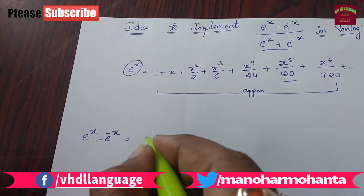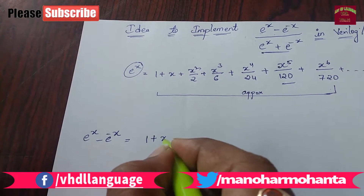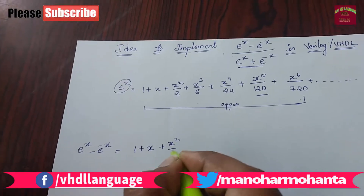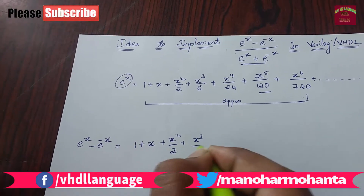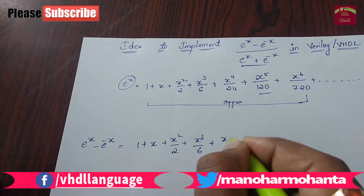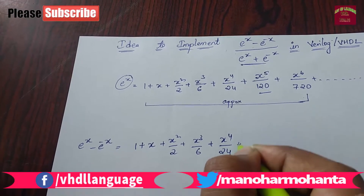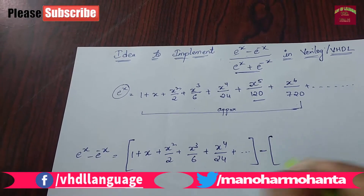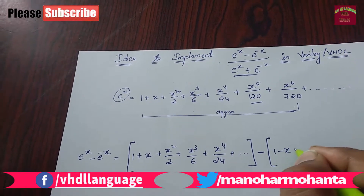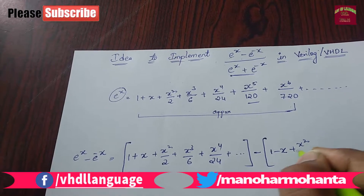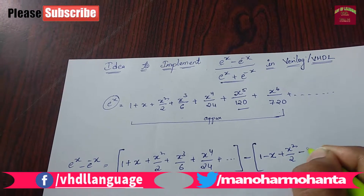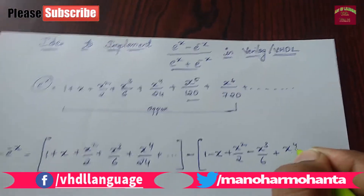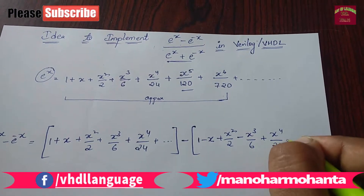So this is nothing but 1 plus x plus x square by 2 plus x cube by 3, x plus x power 4 by 24, plus and so on. Minus your 1 minus x plus x square by 2, minus x cube by 6, plus x power 4 by 24.